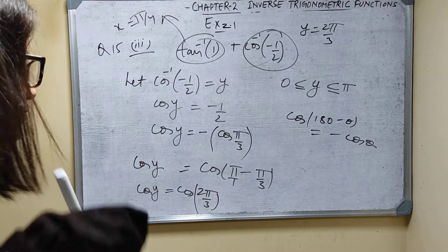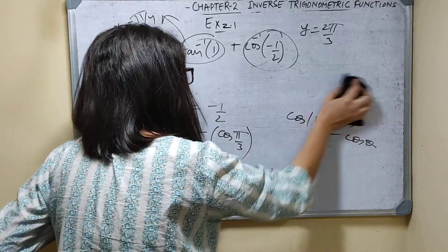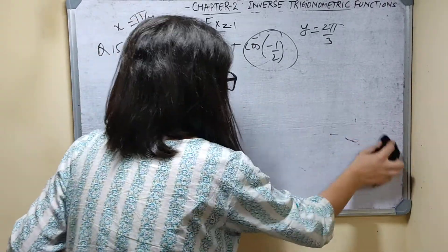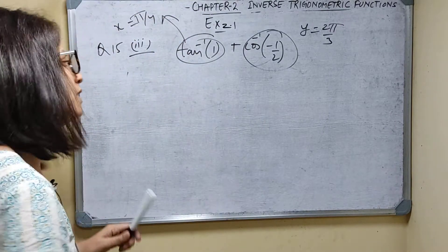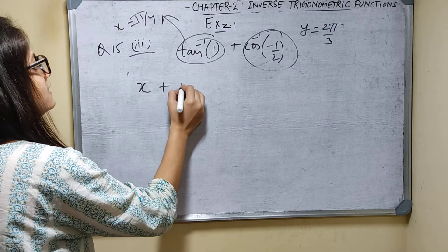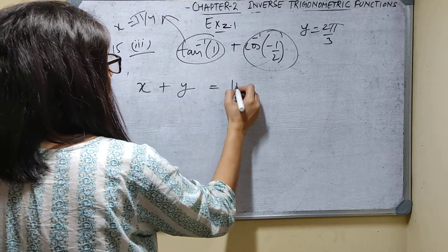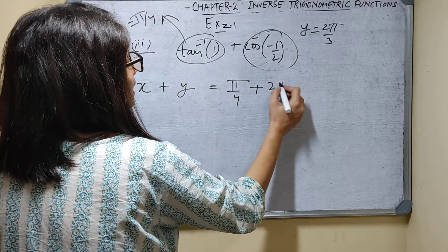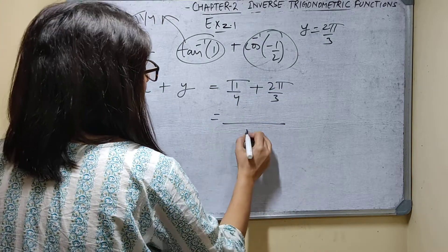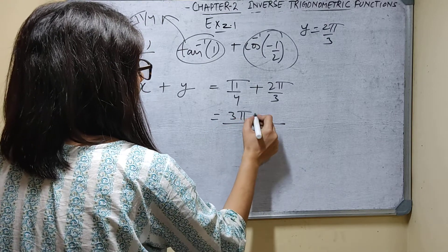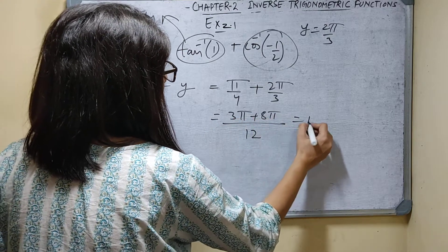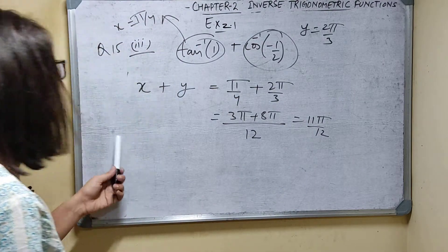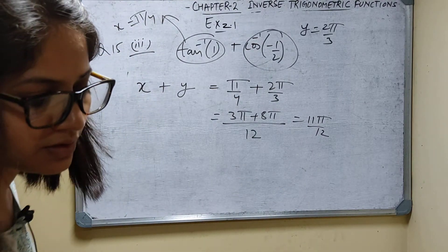Now x plus y = pi by 4 plus 2 pi by 3. LCM of 4 and 3 is 12, so this is (3 pi plus 8 pi) by 12 = 11 pi by 12. The answer is 11 pi by 12.